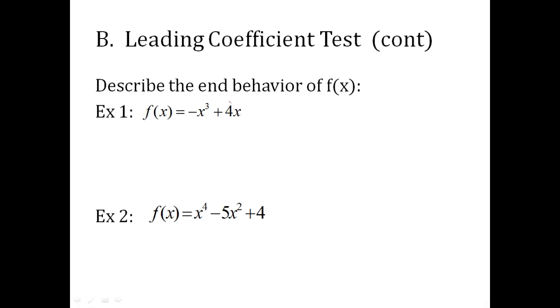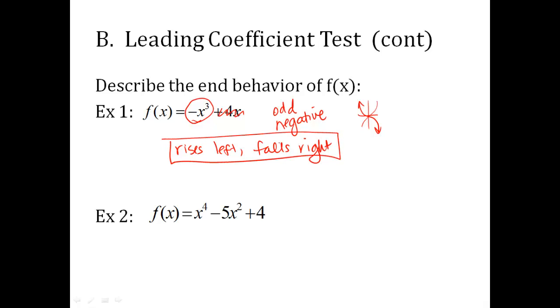So here's some examples of what to do. Describe the behavior of these functions. I look at the highest exponent only. The rest of the equation, I don't even care about. I noticed that it's odd and it's negative, right? So you should have that table written down. That should tell you something. What's going to happen to my graph? It's odd and negative. So normally it would be like this, but since it's negative, it's going to go this way. So what's happening here? It rises to the left, falls to the right.